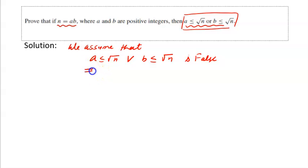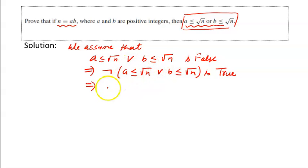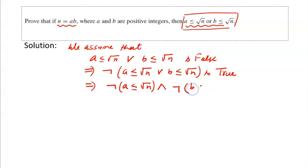If this disjunction is false, it means the negation of (a ≤ √n or b ≤ √n) is true. At this stage, I hope you remember De Morgan's law. So I can write: negation of (a ≤ √n) AND negation of (b ≤ √n) is true.